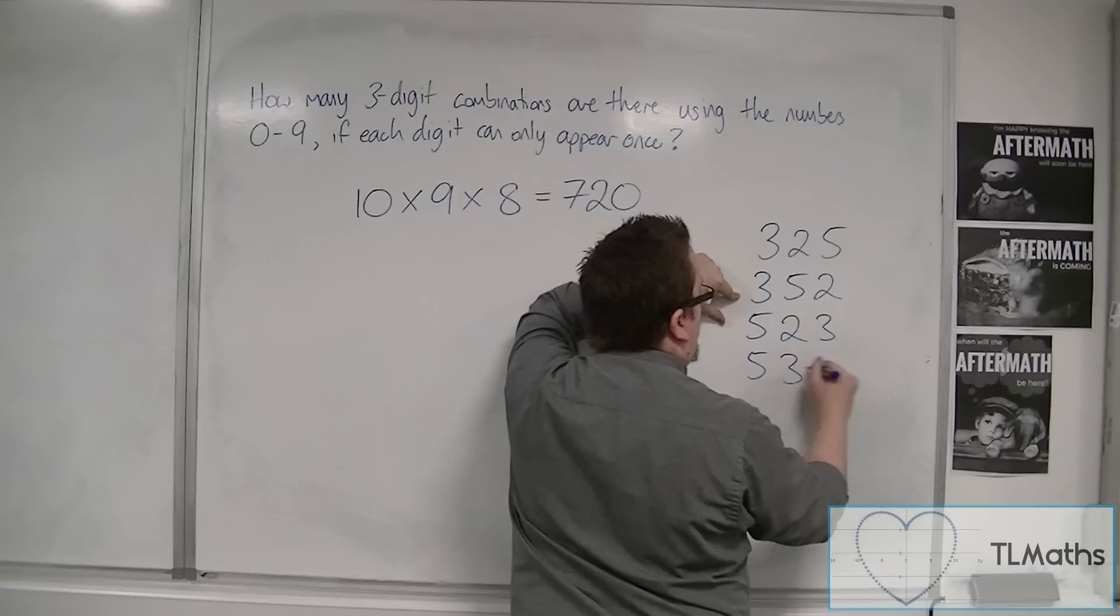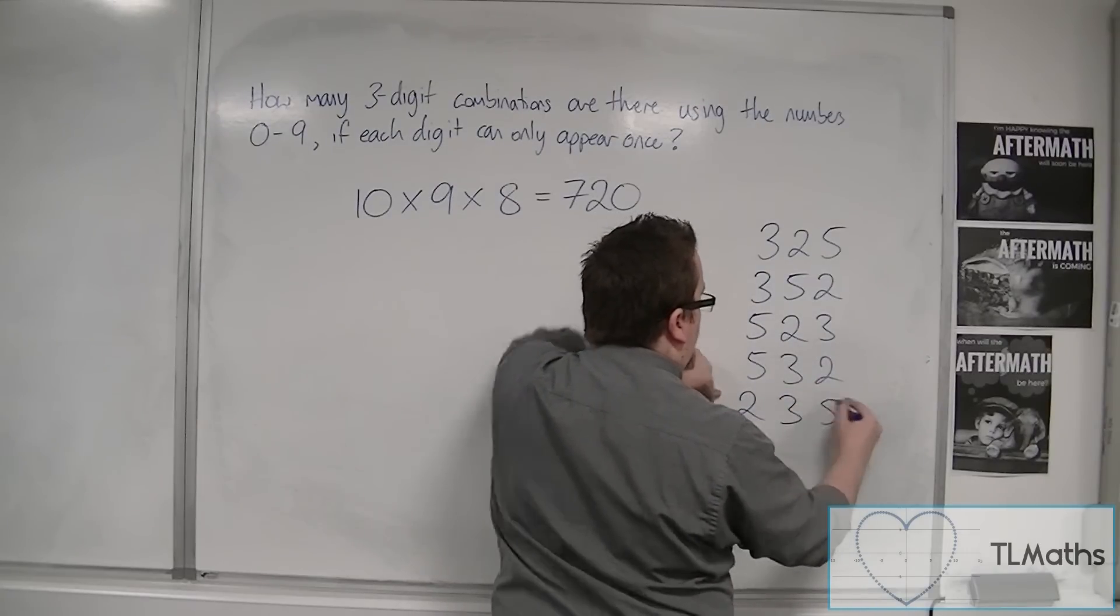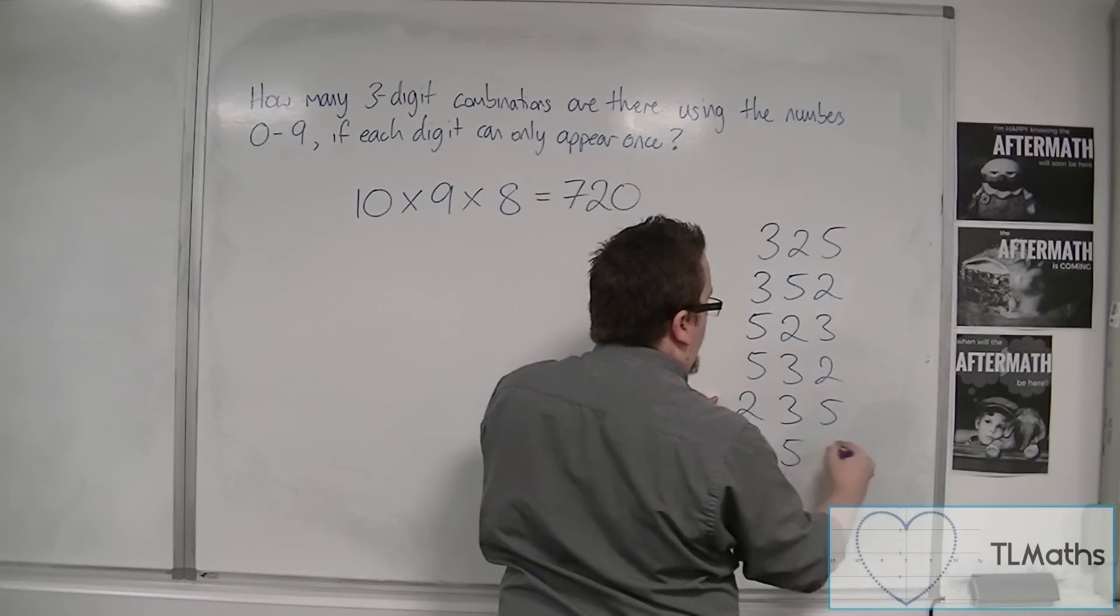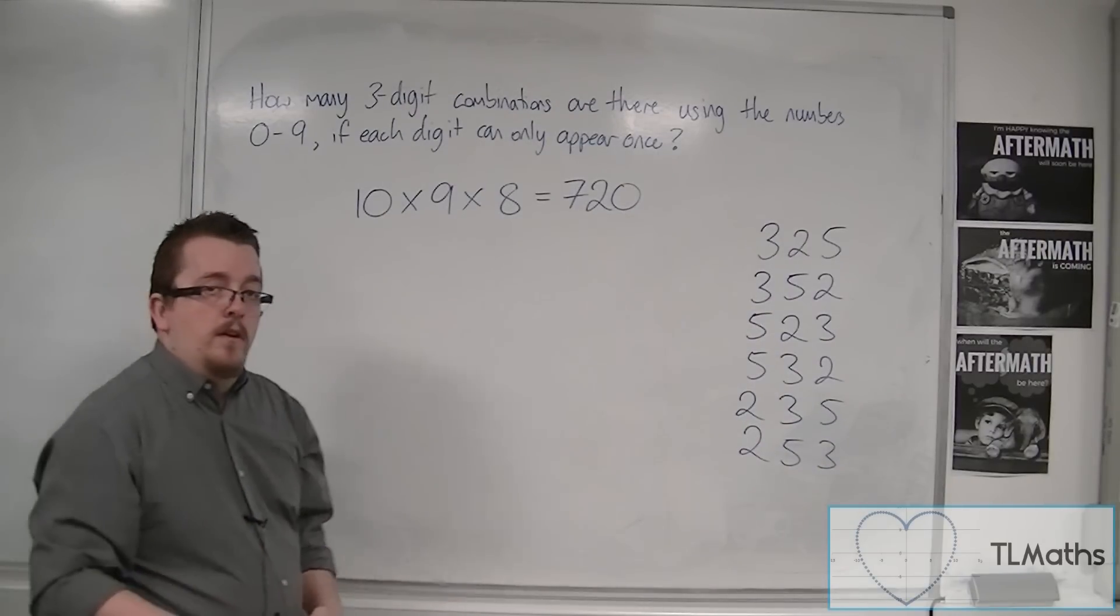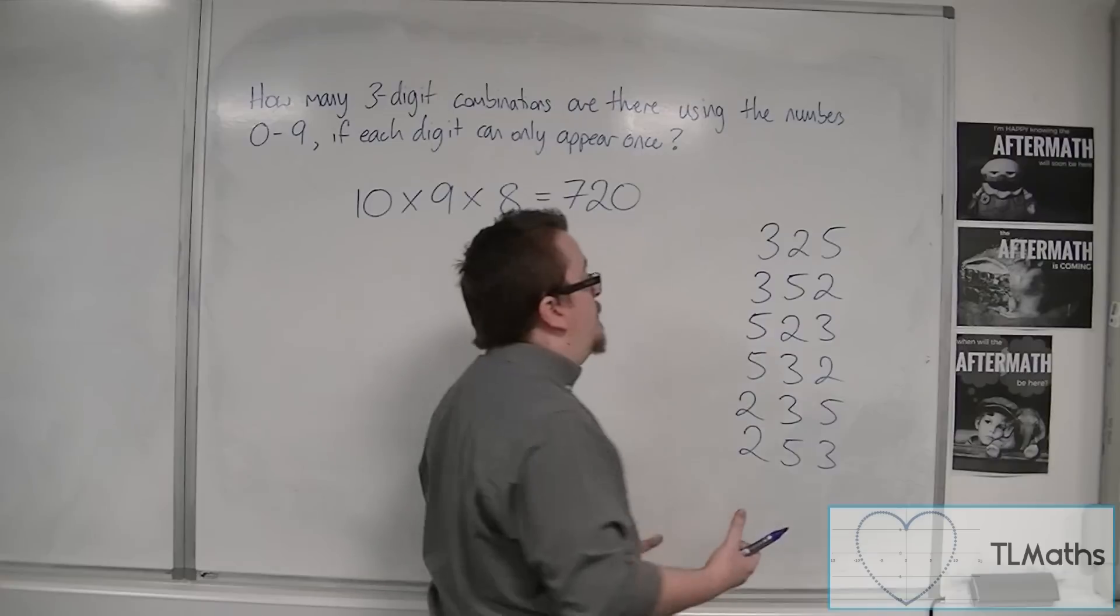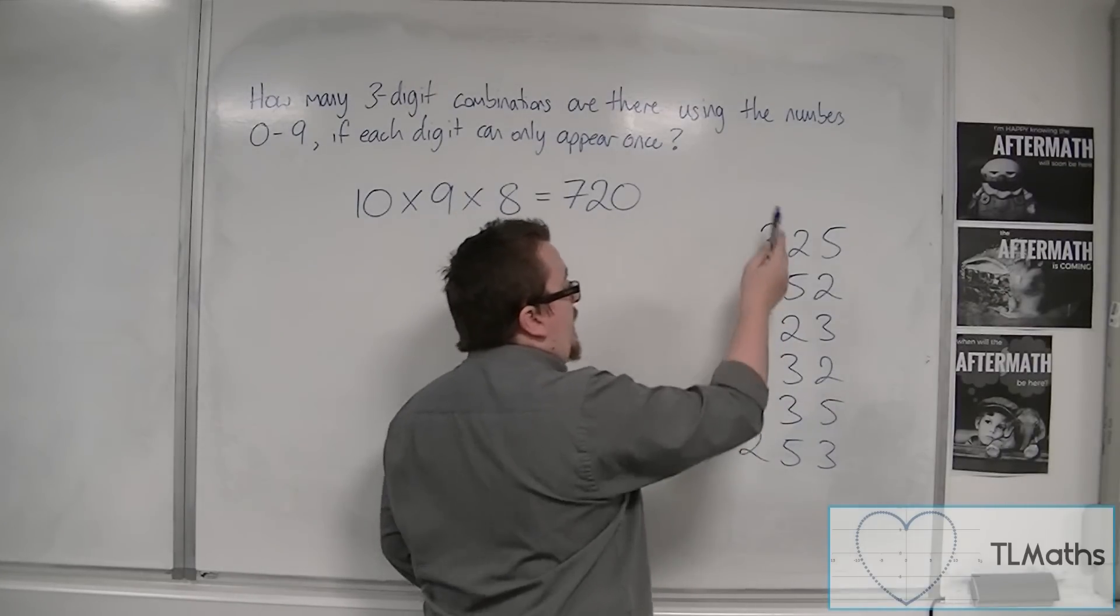Or 5, 3, 2. Or 2, 3, 5. Or 2, 5, 3. So these are all the different arrangements that I could have of those three numbers. So there are 6.